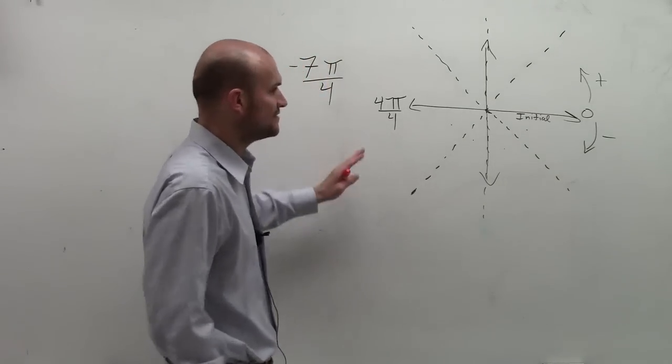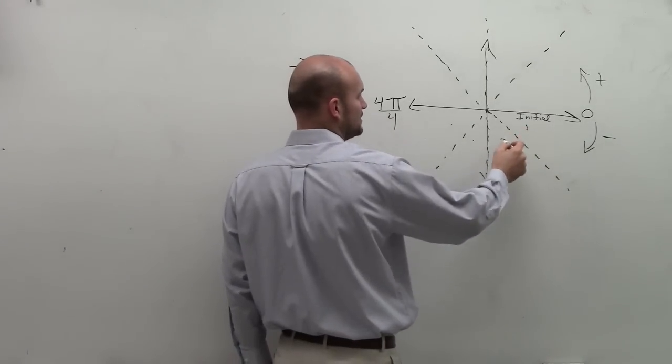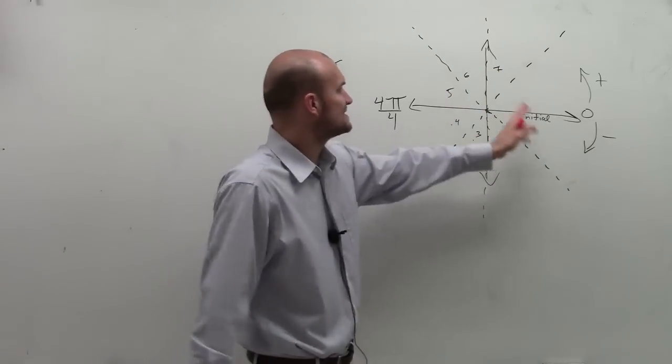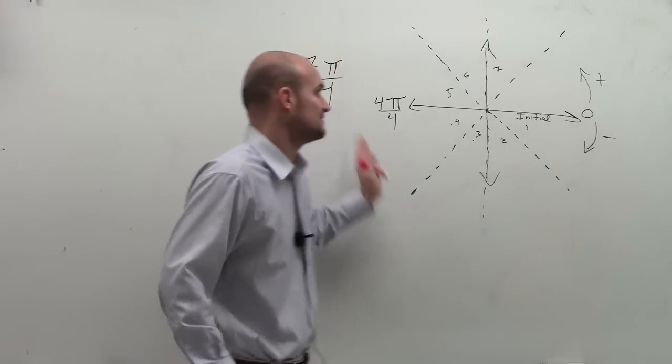So here, if I want to measure now 7 fourths, I'm just going to count. 1, 2, 3, 4, 5, 6, 7. And remember, it's negative because we're going in the negative direction.